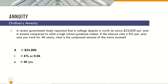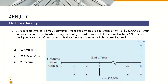First example: A recent government study reported that a college degree is worth an extra $23,000 per year in income compared to what a high school graduate makes. If the interest rate is 6% per year and you work for 40 years, what is the compound amount of this extra income? So A, the annuity amount, is $23,000, i is 6%, and n is 40 years. Illustrating in a cash flow diagram, the per-year amount is $23,000 from the end of the first year up to the 40th year, and we are going to find F, the future amount.